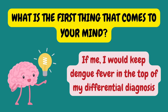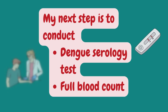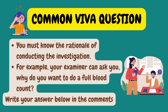What is the very first thing that comes to your mind? In that situation, I would think of dengue fever. My next step is to conduct a dengue serology test and a full blood count. A common VIVA question in exams is that you must know the rationale for conducting the investigation — for example, your examiner may ask why you want to do a full blood count. Write your answer in the comments below.